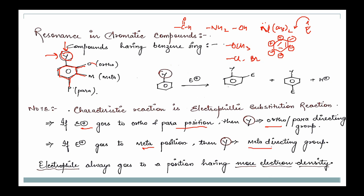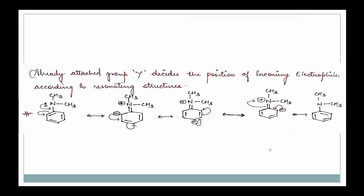Electrophiles will always go where there is more electron density. So let's see — I have a group called N(CH₃)₂, that is dimethylamine. Now this group has a lone pair of electrons. This lone pair, being adjacent to the double bond of benzene, will definitely give you resonance — there will be delocalization.